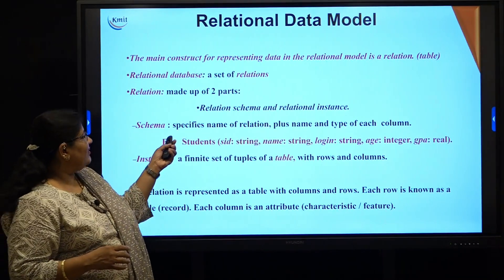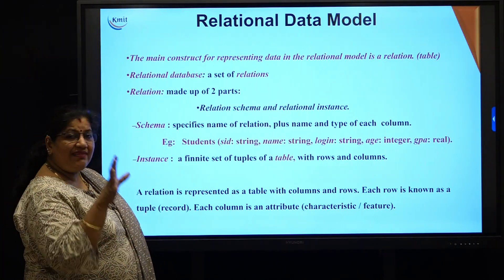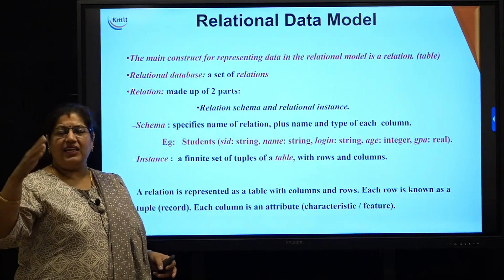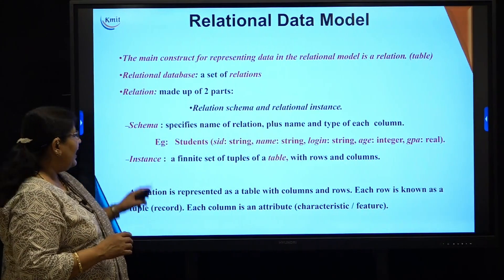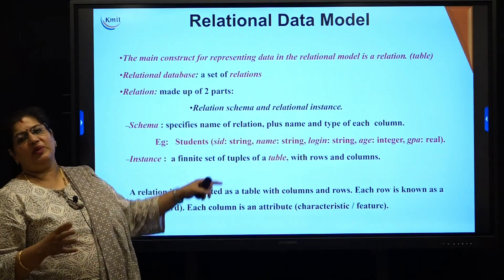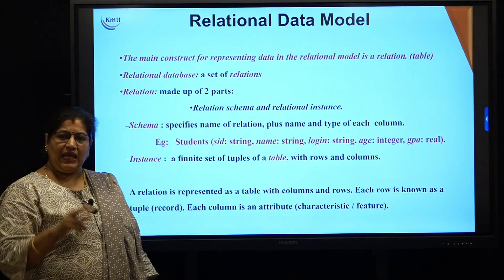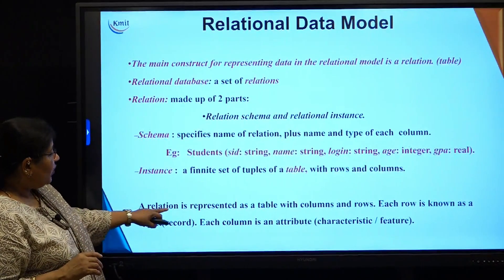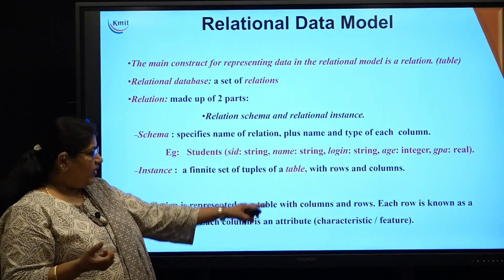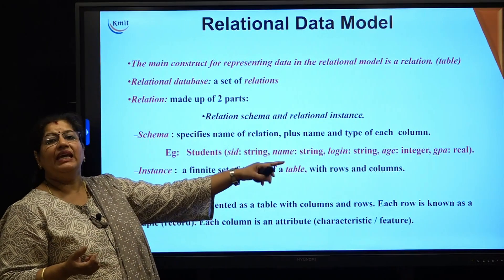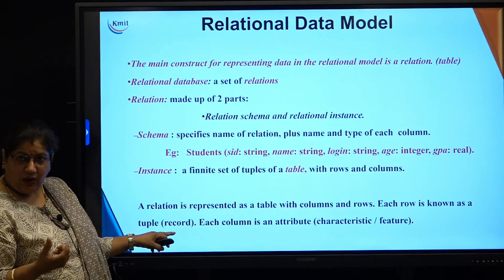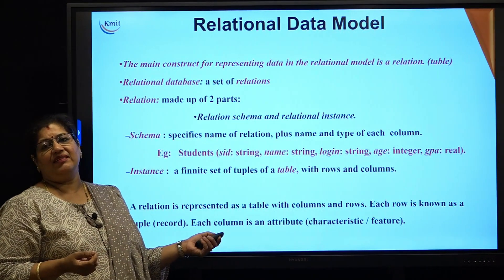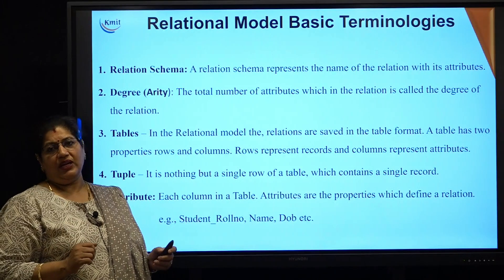The relational schema specifies the structure — that is, the name of the relation and the type of each attribute, which corresponds to columns in a table. The relational instance is the finite set of tuples in that particular table, representing the rows and column collection, which are unique. A relation is represented as a table with columns and rows.